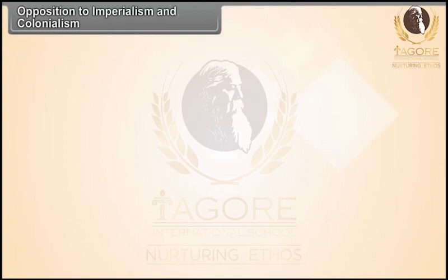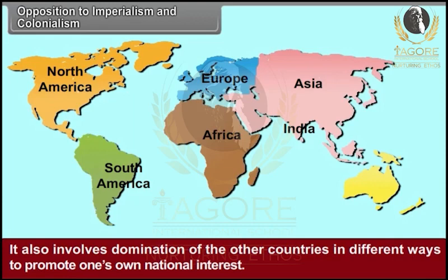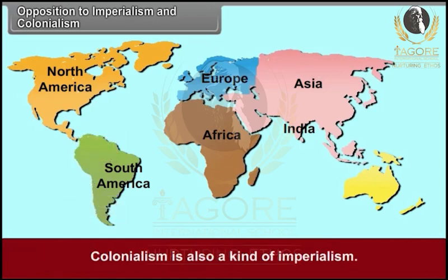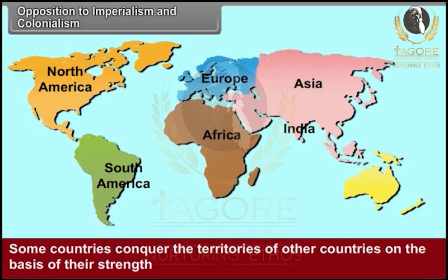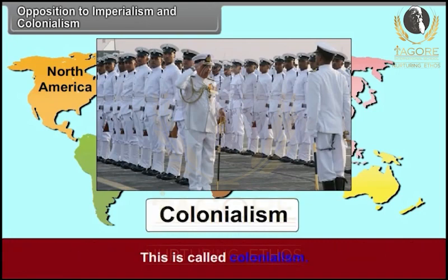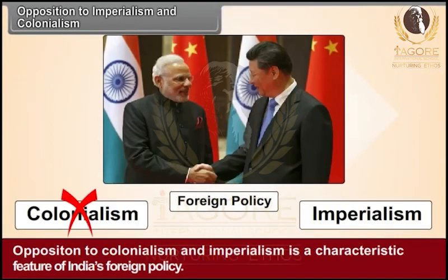Opposition to imperialism and colonialism is one of the main features of India's foreign policy. Imperialism means disrespect for the freedom and sovereignty of other nations, and involves domination of other countries in different ways to promote one's own national interest. Colonialism is also a kind of imperialism, where some countries conquer the territories of others and establish their dominance over that region. Opposition to colonialism and imperialism is a characteristic feature of India's foreign policy.